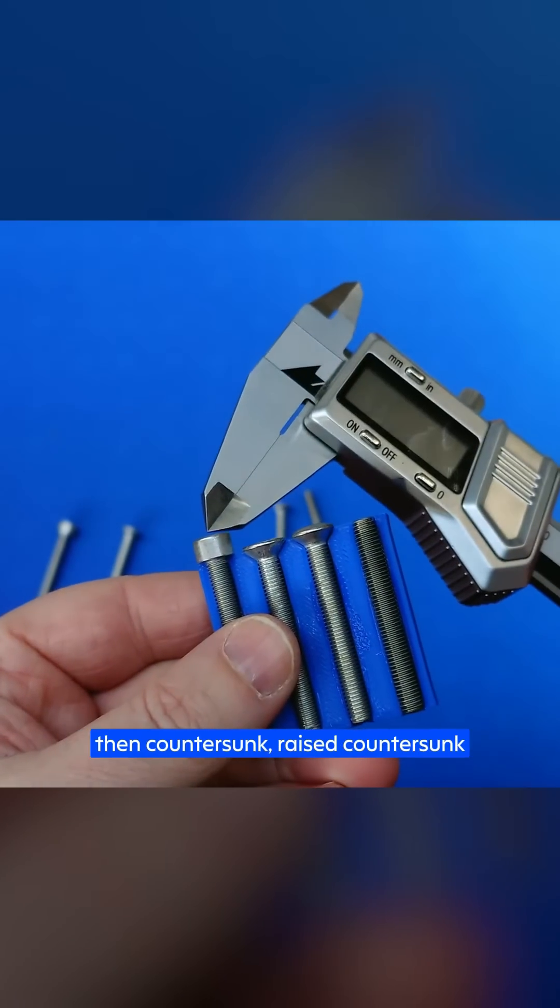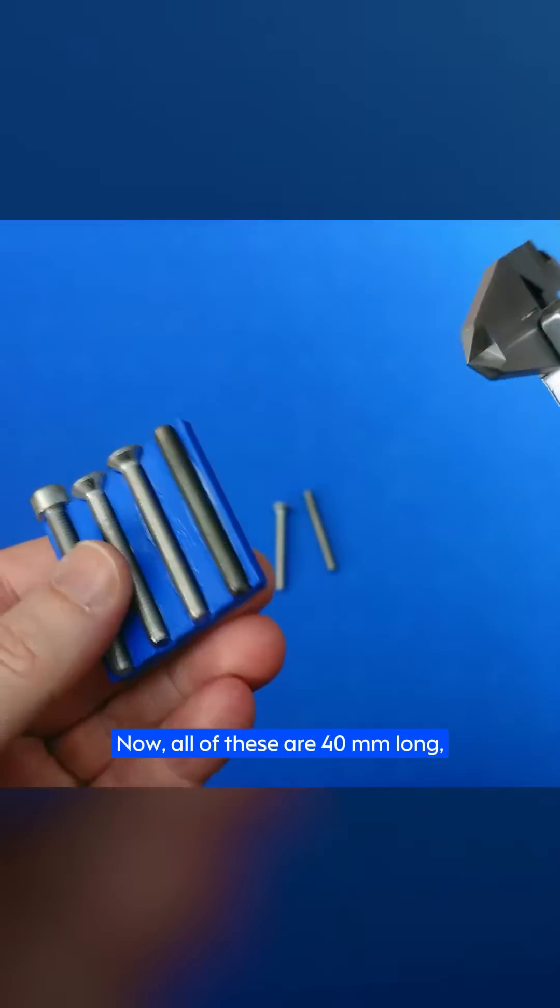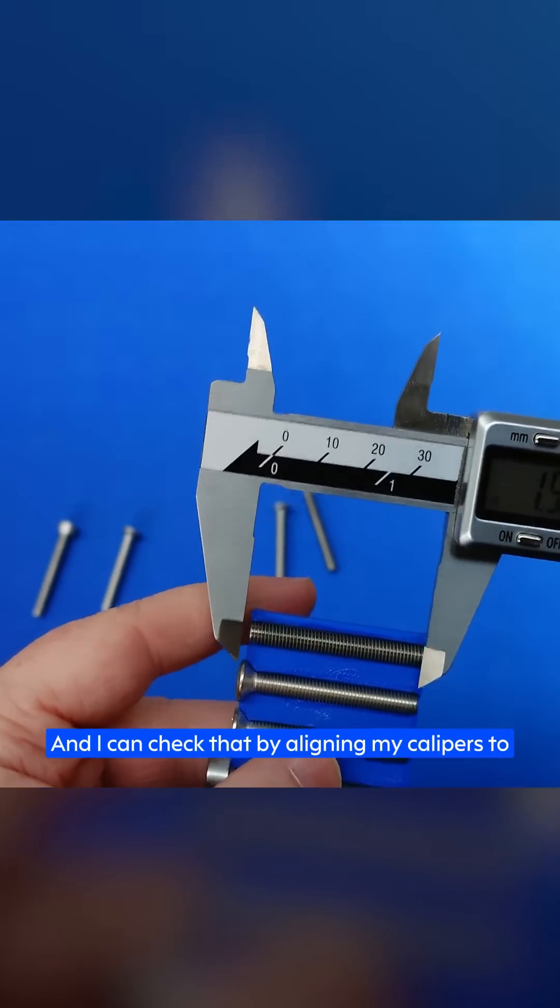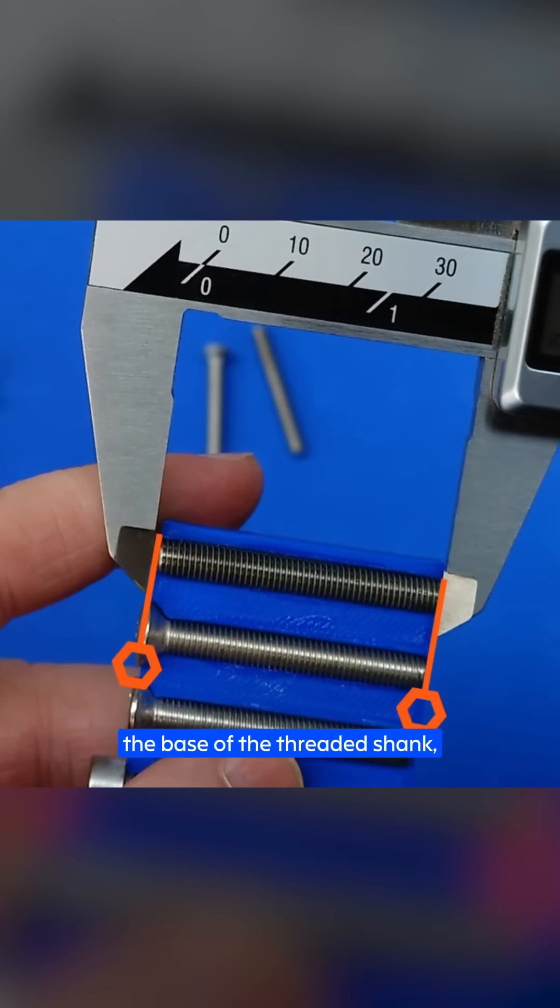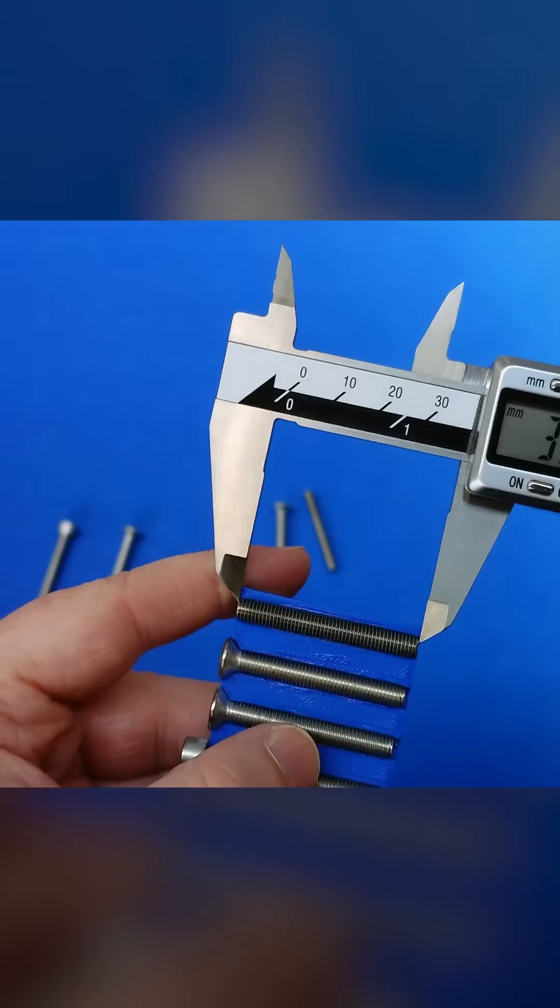Left to right, we've got the same cap head, then countersunk, raised countersunk, and grub screw. Now all these are 40mm long, I know that because I went and got them out of stock, and I can check that by aligning my calipers to the base of the threaded shank, and then measuring up to the point where the material would sit on that screw.